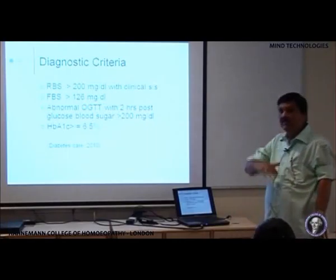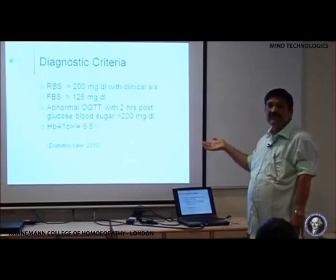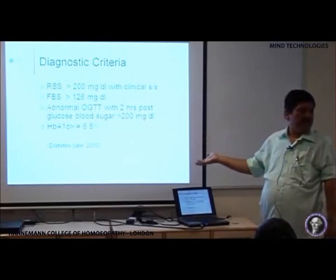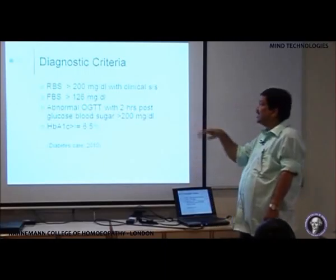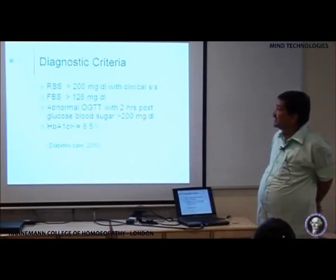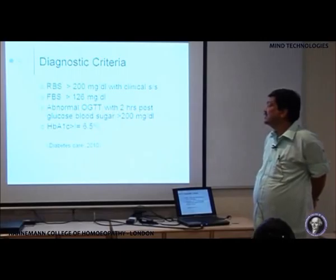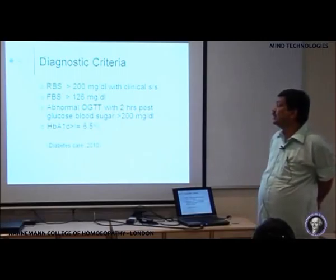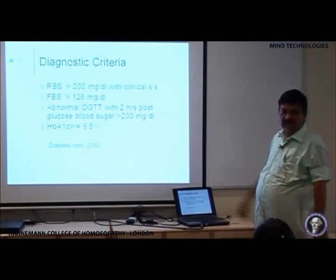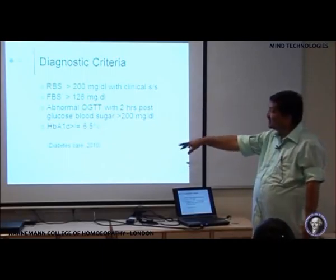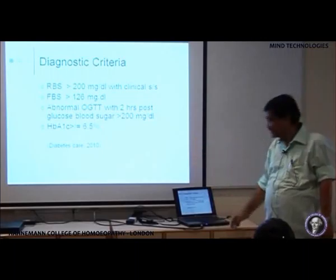We will talk about abnormal glucose tolerance test later on when we discuss type 2 diabetes mellitus. The fourth diagnostic criteria is HbA1c which is equal to or more than 6.5%. This is the latest diagnostic criteria published in Diabetes Care 2010.